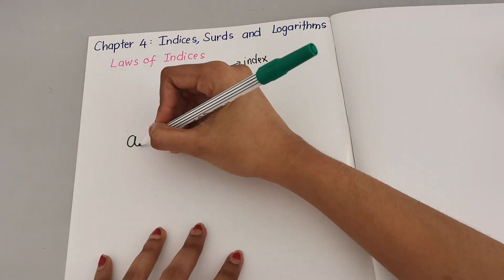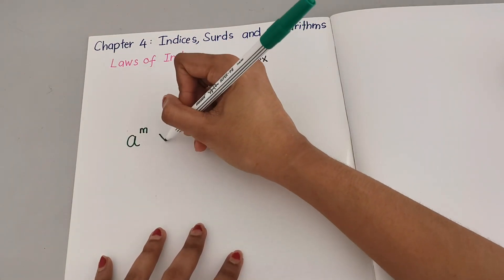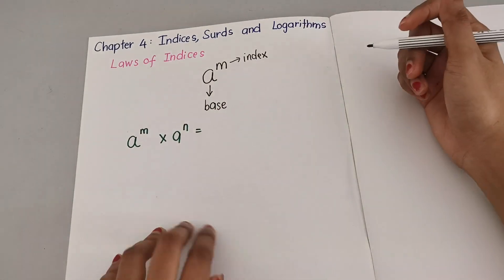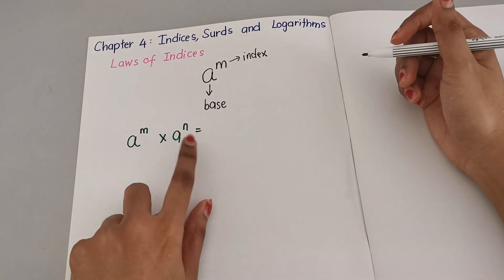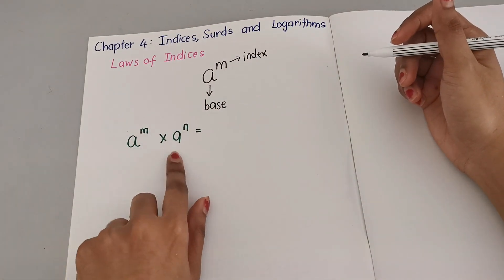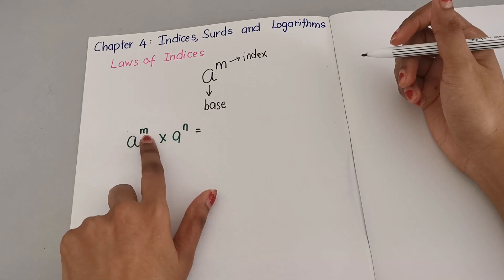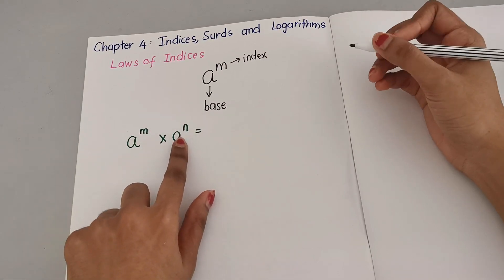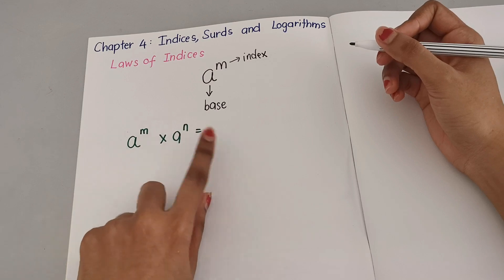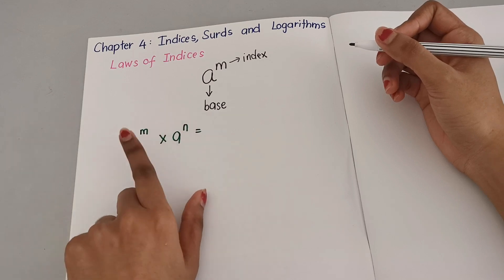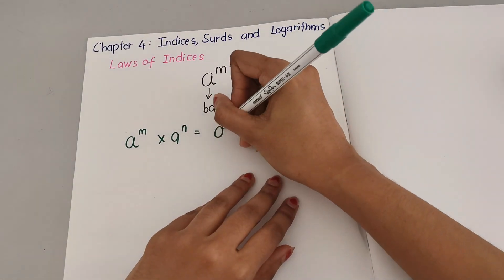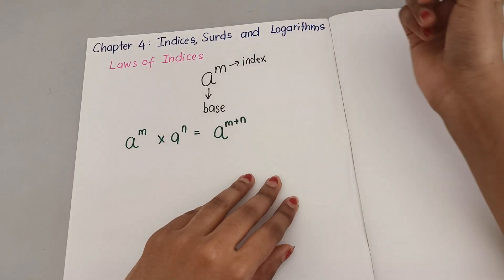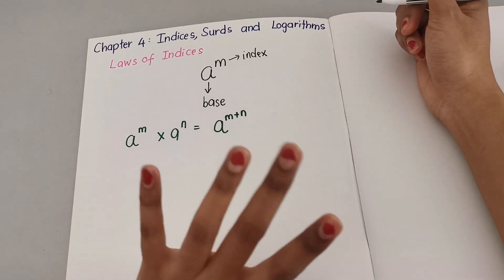So let's say you have A to the power M times A to the power N. As you can see, they have the same base but different index. So when you have the same base but different index and it's multiplication, what you're going to do to the index is you're going to add them.